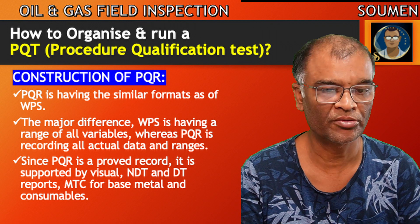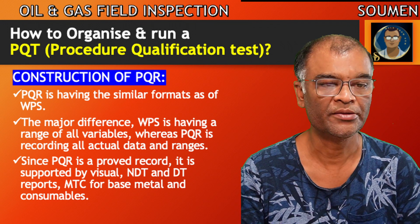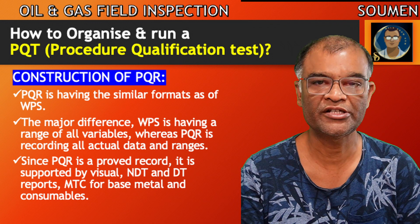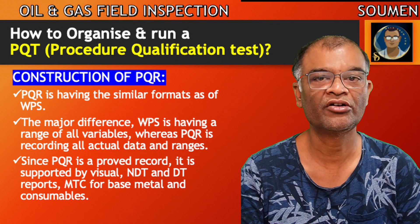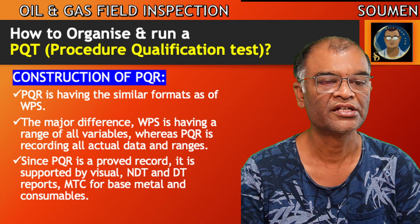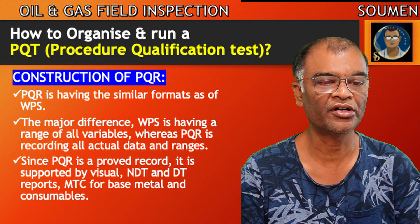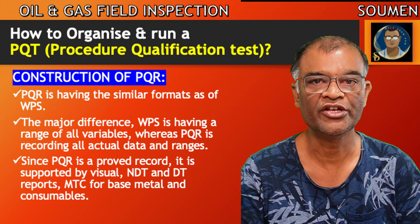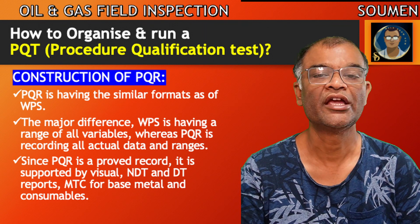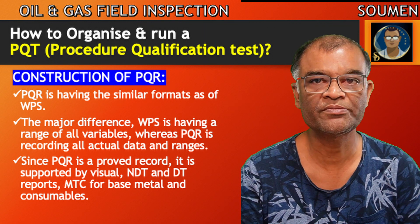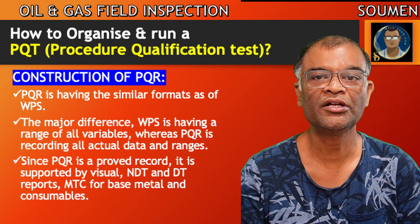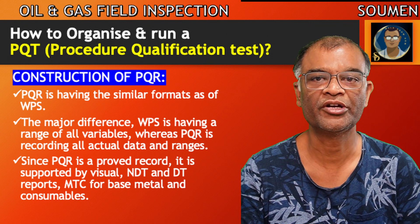The PQR has a similar format to a WPS. The major difference is that the WPS contains a range of all the variables, whereas the PQR records the actual data. Since the PQR is an approved record, it is supported by visual, NDT, and destructive test reports, as well as MTCs for base materials and welding consumables.